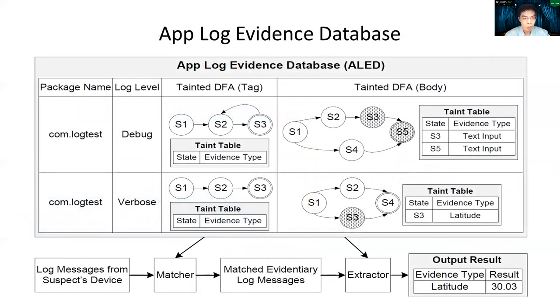We propose to build app log evidence database in the offline phase by analyzing real-world apps. Each entry in database represents a log message pattern, including log level, the string patterns of log tag, and log body, that may be written into a logging system during the runtime. The log string pattern is summarized as tainted DFA, which will be covered later. The workflow at the bottom demonstrates how we use this database to identify and match the evidence from log messages.